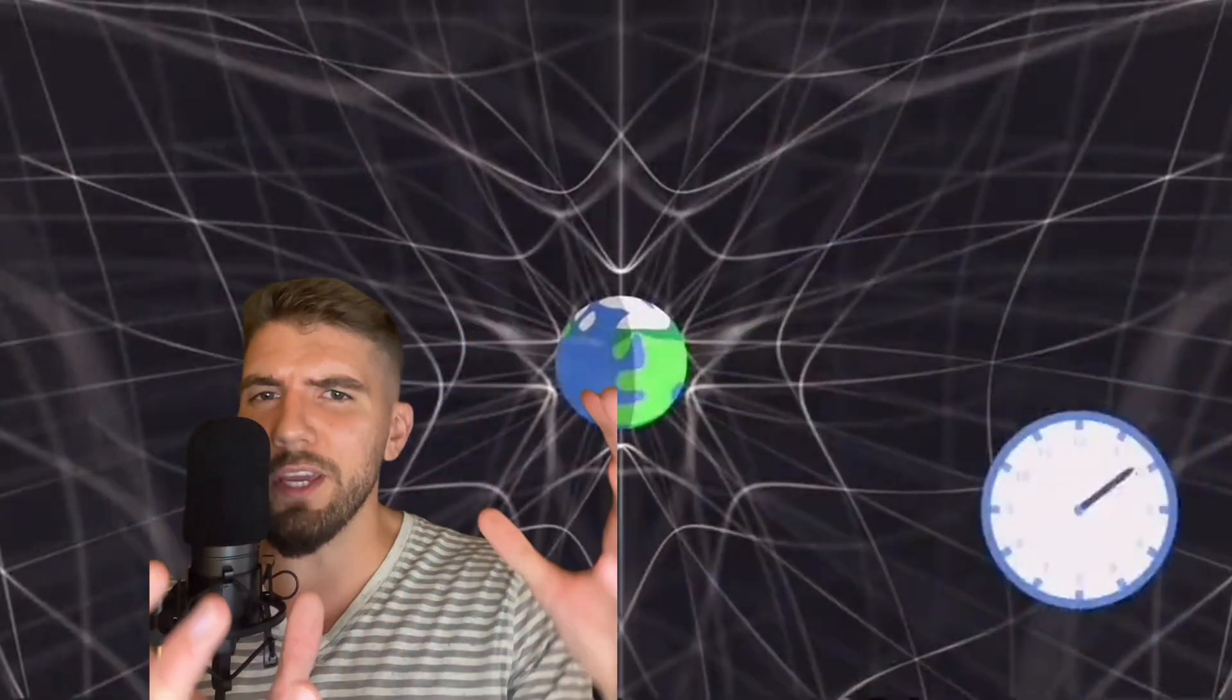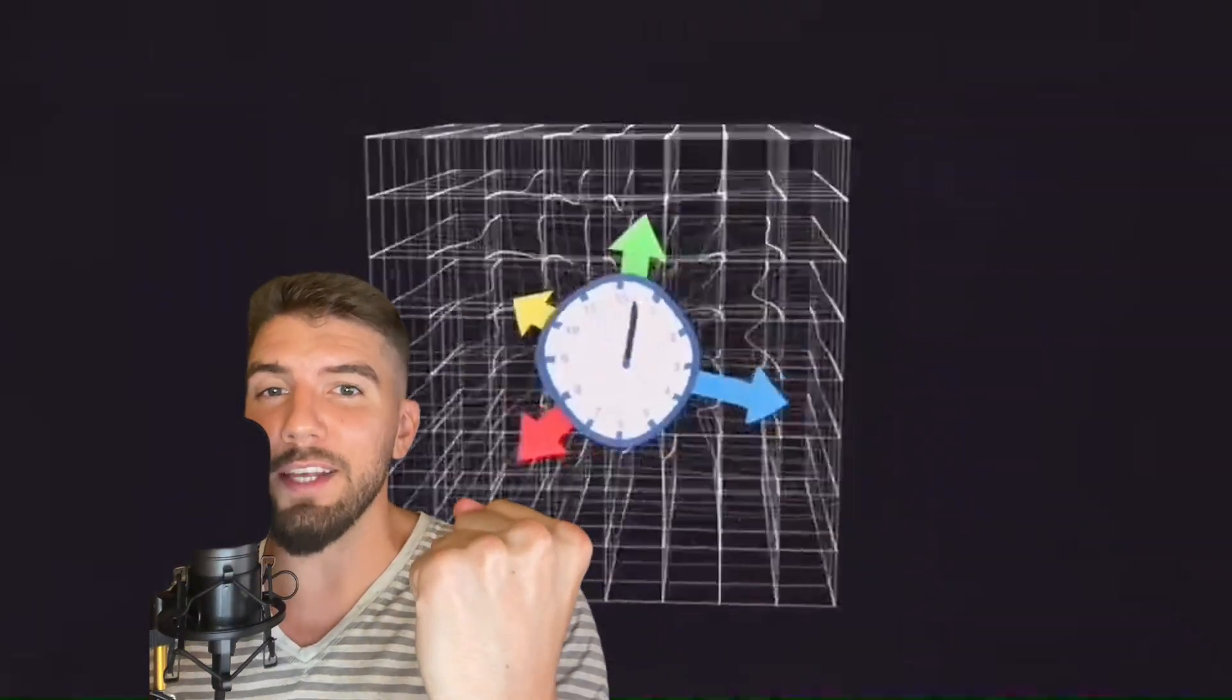Expand this 2D plane into 3D, and you have space-time. This warping of space around an object with mass is what causes gravitational attraction between objects.